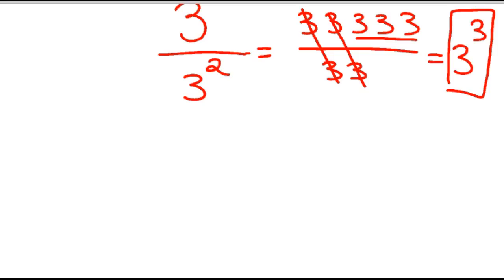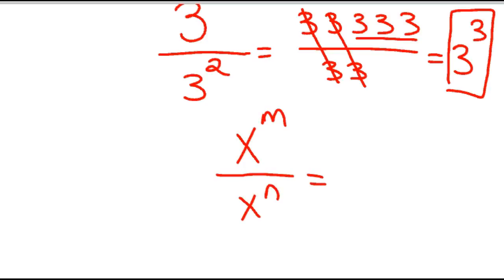So what's happening here is: if you have anything — say we have x to the m-th power over x to the n-th power — the rule for this is simply m minus n.